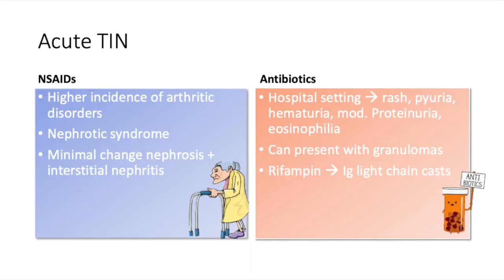TIN has almost the same manifestations regardless of the culprit, so it's important to differentiate those that have unique characteristics. NSAIDs are usually found in the elderly because this population has a higher incidence of arthritic and pain-related disorders. TIN provoked by NSAIDs can present as nephrotic syndrome, and on biopsy you can observe minimal change nephrosis with interstitial nephritis. Antibiotic-induced TIN is usually seen in the hospital setting with rash, pyuria, hematuria, moderate proteinuria, and eosinophilia, and can also present with granulomas. Something unique about the anti-tuberculosis medication rifampin is that this TIN can present with Ig light-chain casts in urinalysis.